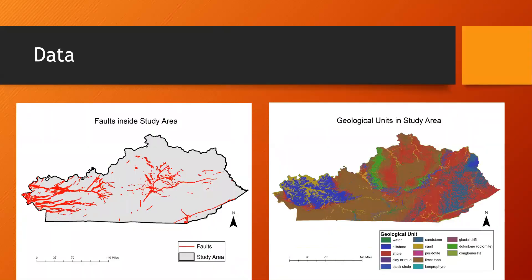On the right, the brown area corresponds to limestone, and you can definitely see where those two areas of high sinkhole concentration align — in the far west and in the central area. On the left are the faults. Faults are important because they are cracks in the bedrock that allow water to seep down into the rocks and dissolve the interior, leading to those cavities that eventually collapse. Limestone and dolostone are the most soluble rocks in Kentucky, and that's where most sinkholes will be located.